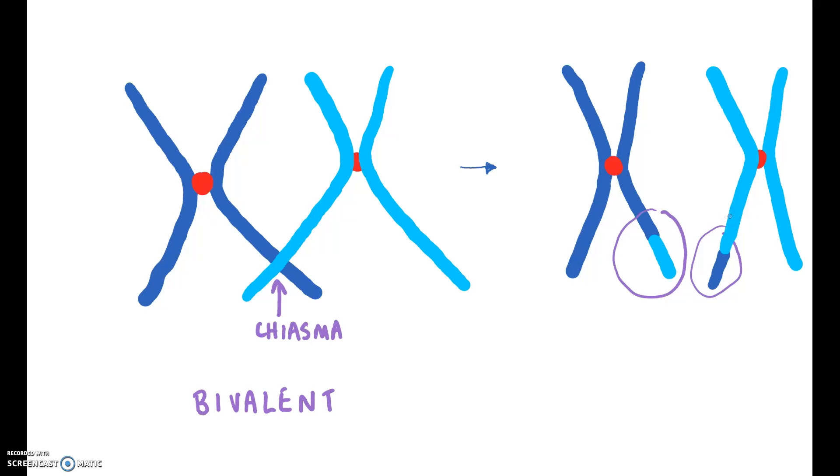Now, of course, what this does is it once again increases the variation in the combination of alleles, because what we now have is we have a maternal chromosome with a few paternal alleles and a paternal chromosome with a few maternal alleles. And so this is yet another way that we are able to use meiosis to increase variation.